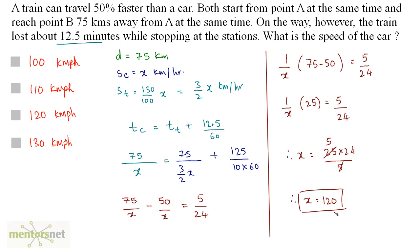Solving this equation gives x equals 120 km/h. Since x is the speed of the car, the speed of the car is 120 km/h, which is option D.